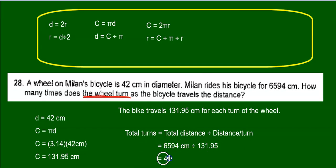And we get approximately 49.97 turns, which is about 50. So we'll just round it off to 50. So if the bike turns 50 times, the wheel turns 50 times, 50 times that will give us 6,594 centimeters.